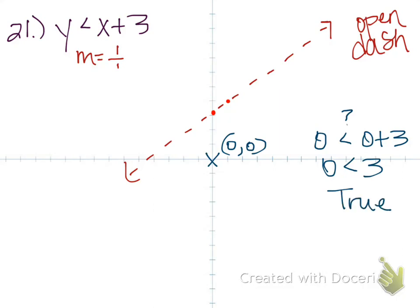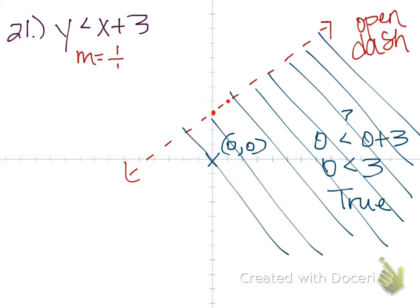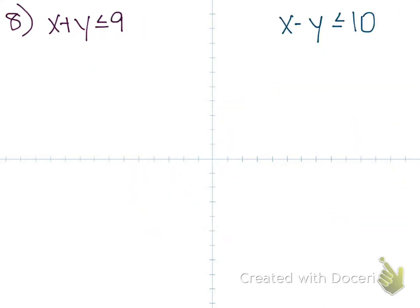What that means is my point 0, 0 is on the true side and the true side always gets shaded. So this side of my line is the shaded side. Remember when we did that? Is it coming back to you maybe? Hopefully.